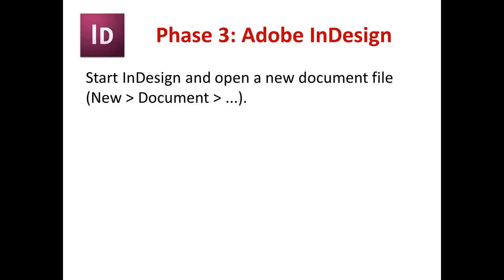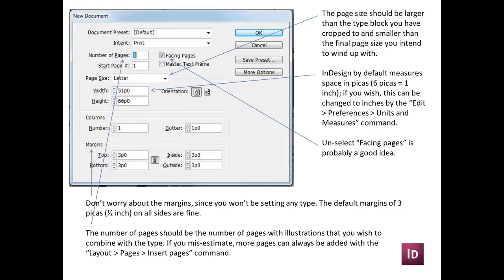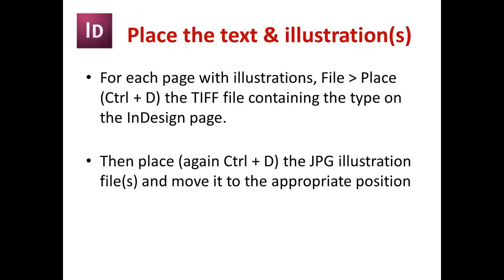Now we go to Adobe InDesign to combine them. Start InDesign and open a new document file under New Document. The major thing is the page size — you want your page size to be larger than the type block you've cropped down to, but smaller than the final page size you intend to wind up with. InDesign by default measures space in picas, but you can change that under Edit > Preferences > Units > Measures to inches if you're more comfortable. You can unselect facing pages if you want. Don't worry about the margins — you won't be setting any type, so the default half-inch margins are fine. The number of pages should be the number of pages with illustrations; you can always add more pages as you go.